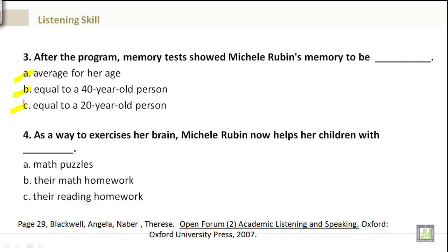Number 4. As a way to exercise her brain, Michelle Rubin now helps her children with: A. Math puzzles. B. Their math homework. Or C. Their reading homework.